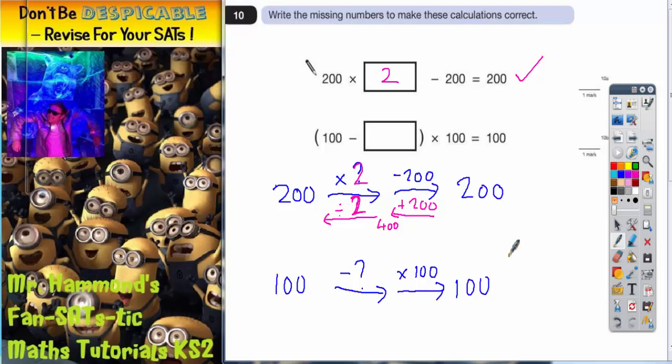Now we're going to reverse it backwards. So the reverse of multiply 100 is divide by 100. The reverse of subtract a mystery number is to add on that same mystery number.